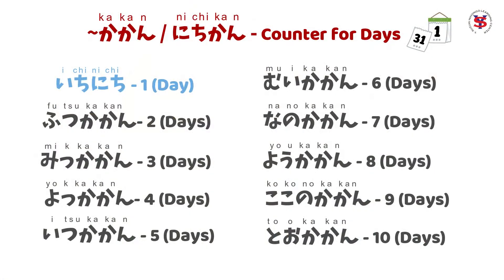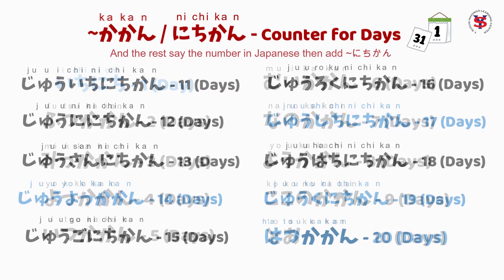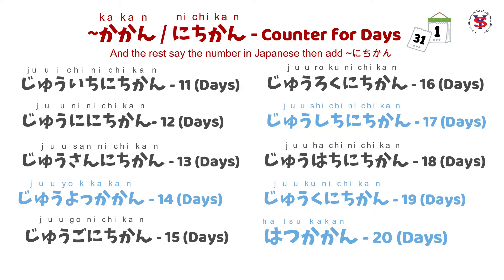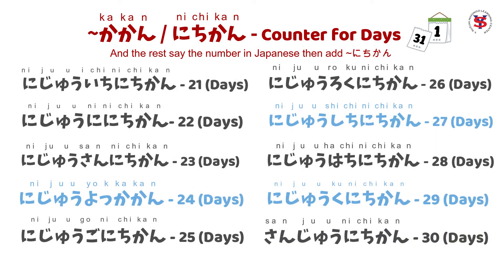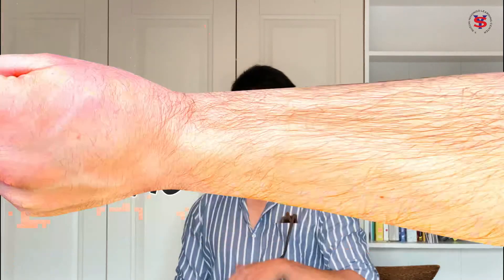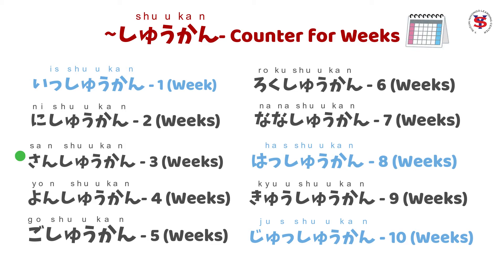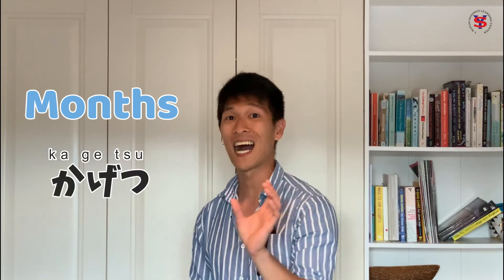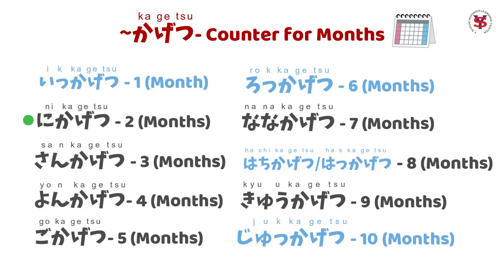For days, we have nichi — pero marami tayong exceptions dito, so be careful. For weeks and months, we have shuukan — as in 1-shuukan, 2-shuukan, 3-shuukan — and kagetsu for months — so 1-kagetsu, 2-kagetsu, 3-kagetsu, 4-kagetsu, 5-kagetsu, and so on.